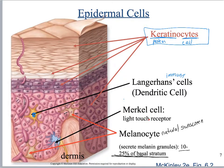One more cell type is the Merkel cell, which is a light touch receptor. It is only found right against the basement membrane, so it's only in the stratum basale. You can see the neuron that attaches to it, and it detects things like a light caress — not deep pressure, just really light touch.